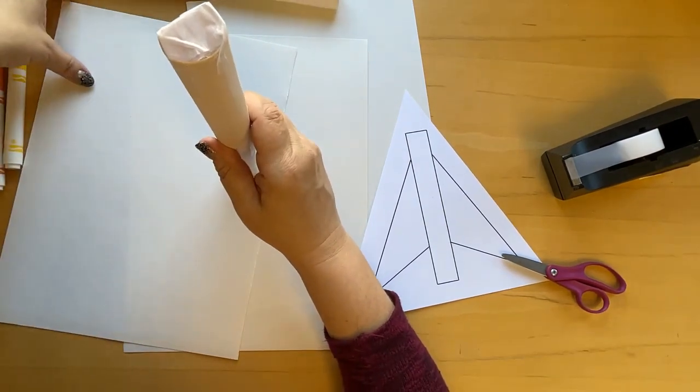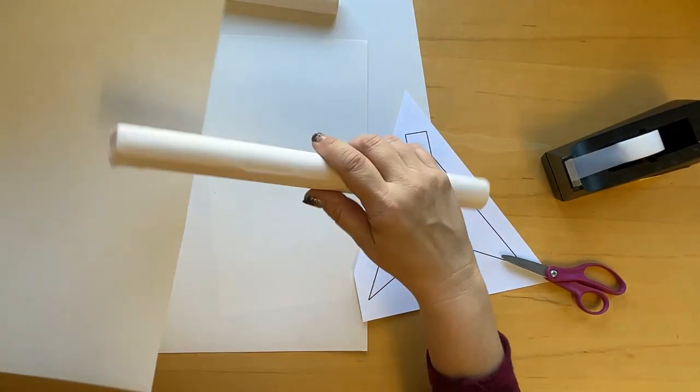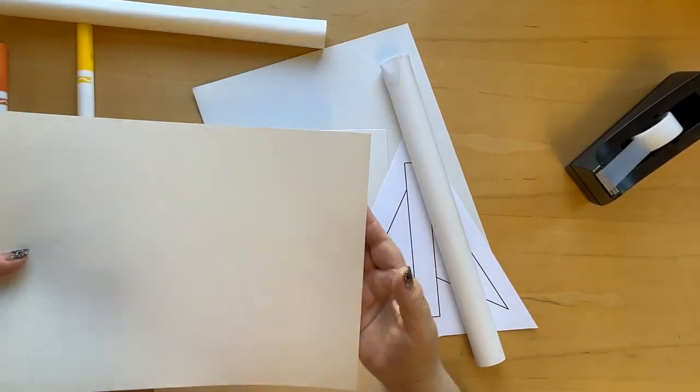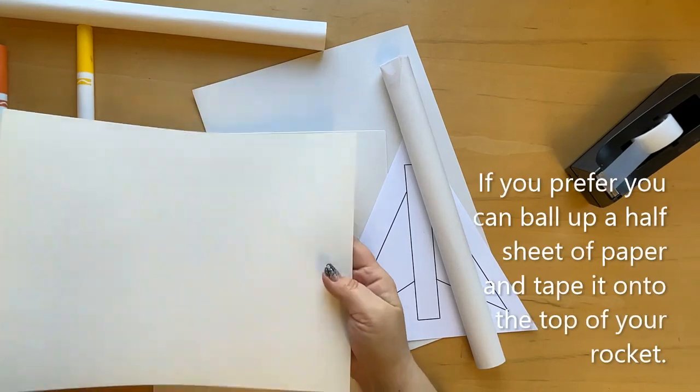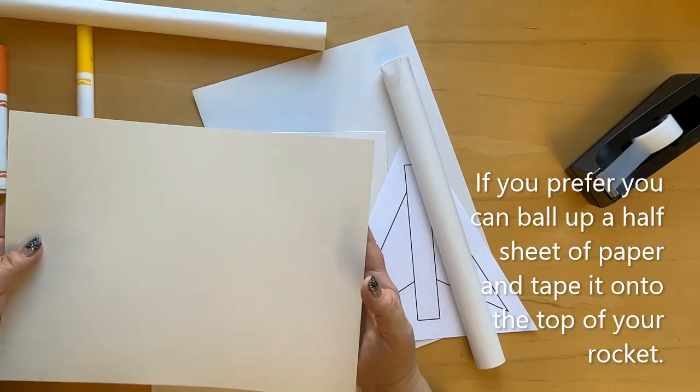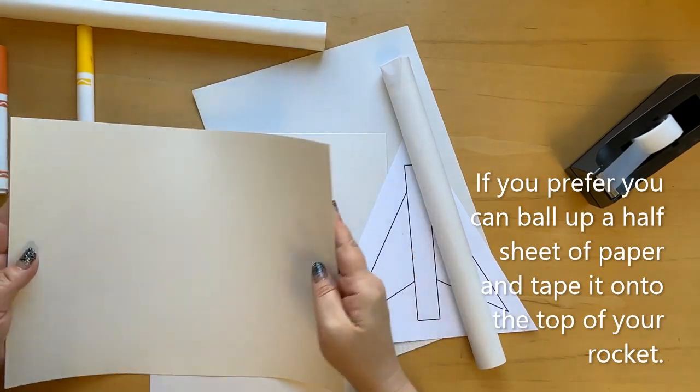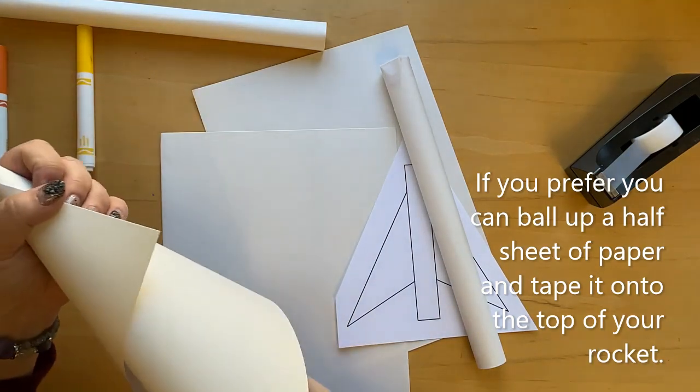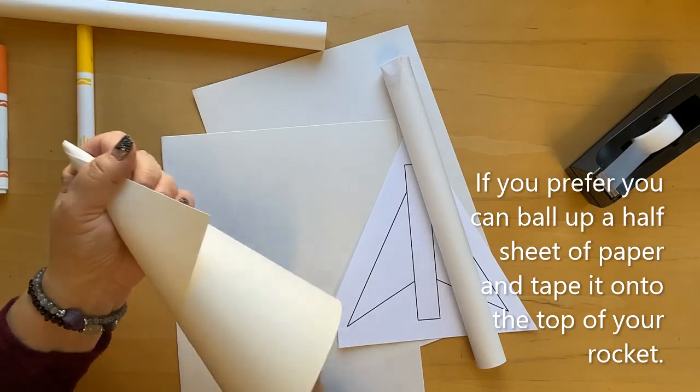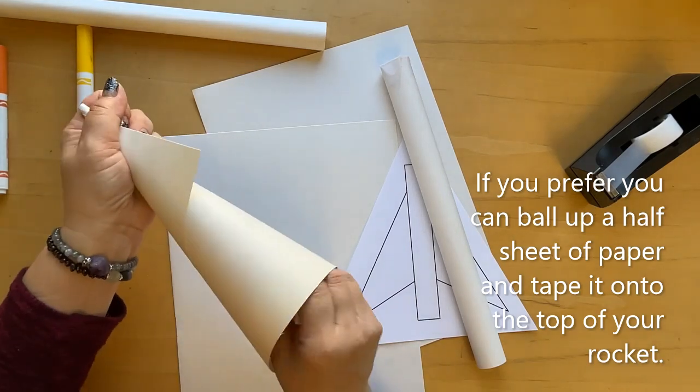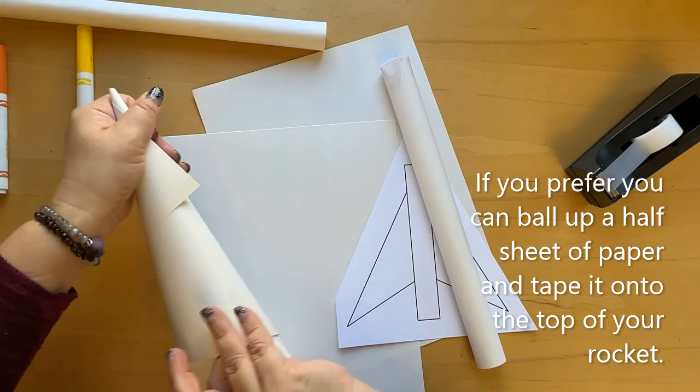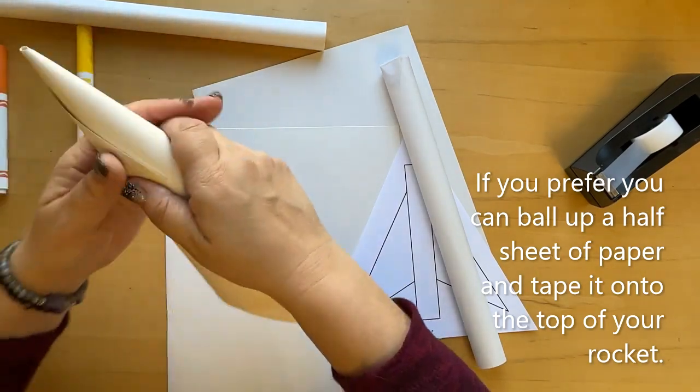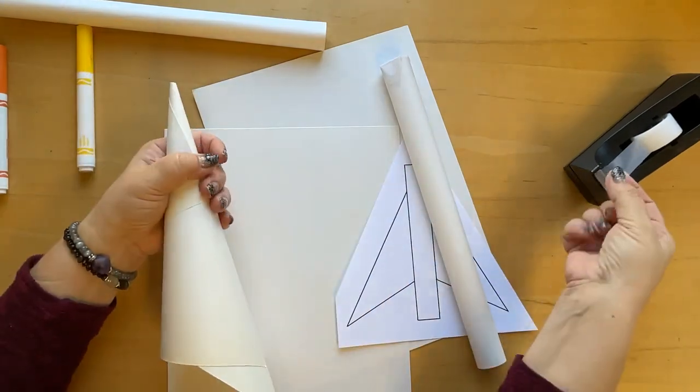Next, we're going to use another sheet of paper to make the nose cone for our rocket. To make the nose cone, you're going to take one of the sheets of paper and on the long end, you're going to kind of roll it in on itself until it looks about like that, like a waffle cone. And then just go ahead and tape it.